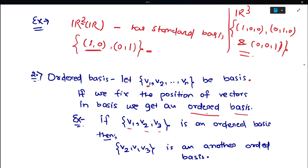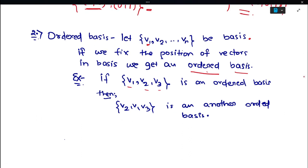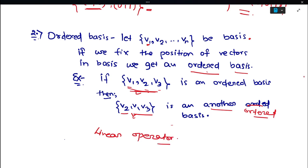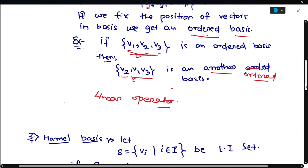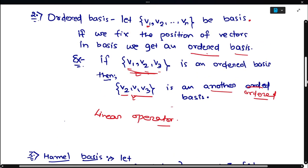For example, let v1, v2, v3 be an ordered basis. If we swap the positions of v1 and v2, we have the same members as before but we get another ordered basis — these two are considered different ordered bases. The use of ordered basis we will learn in linear operators; we will use it to form the matrix of a linear operator.